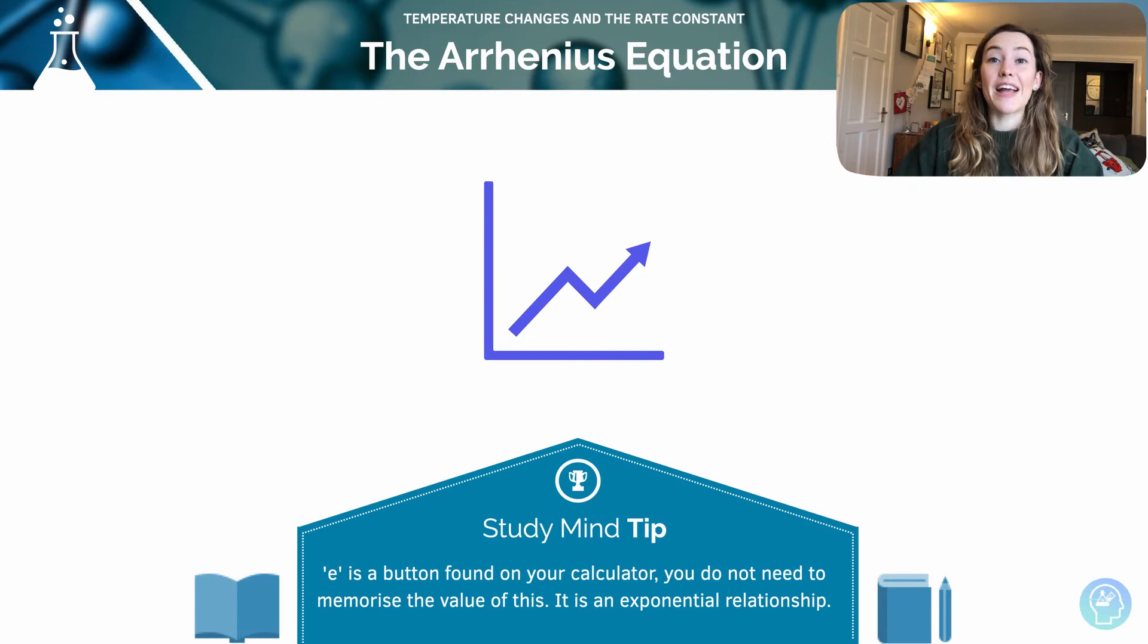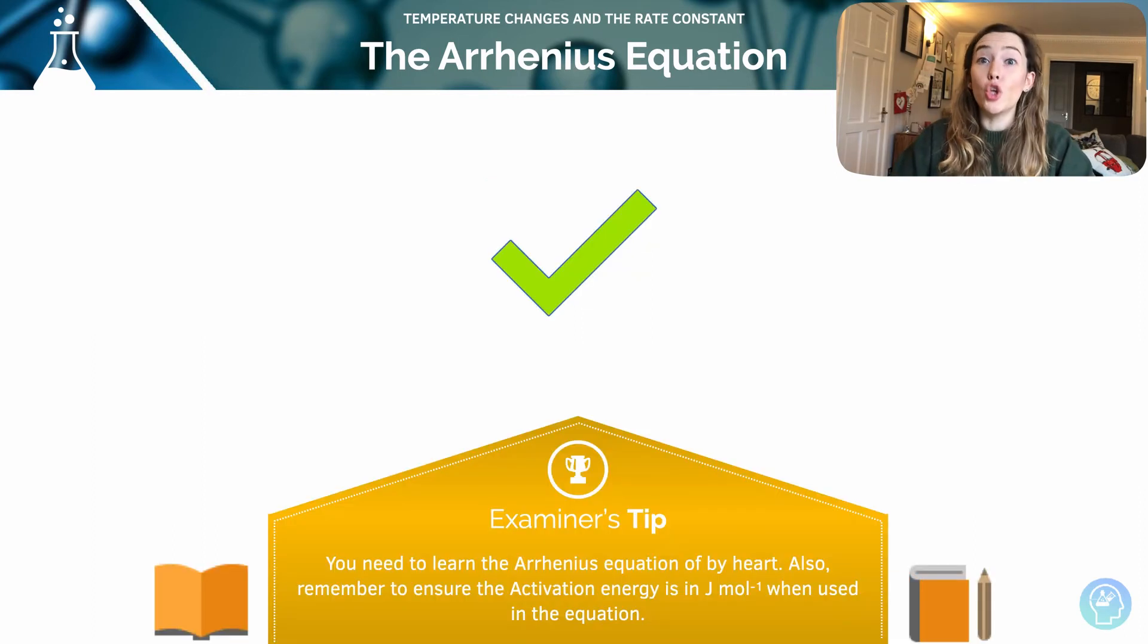So e means there's an exponential function. It's a button that you can find on your calculator. So I really recommend you get used to these calculations on your calculator that you're going to have in the exam with you as well. You don't need to memorize the value of e. It's an exponential relationship. That's all it means. And the value is always going to be in your calculator. You need to memorize the Arrhenius equation by heart. It's really important for you to be able to access any of these calculations. And activation energy is in joules per mole. You'll often have values that come up in kilojoules. You need to convert those into joules before you work out any calculation using the Arrhenius equation.